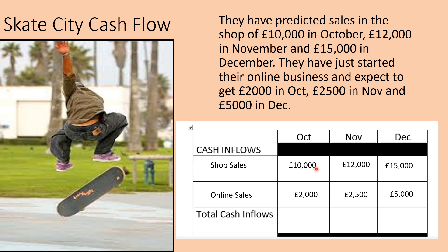Those are the only cash inflows they received in those months. To get the total cash inflows I add them both together. So £10,000 from shop plus £2,000 from online gives total cash inflows in October of £12,000, in November £14,500, and our best month is December with £20,000 worth of cash inflows.